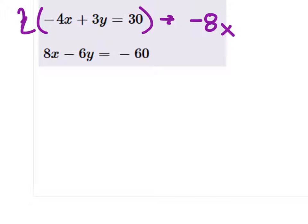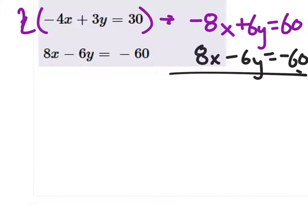negative 8x plus 6y equals 60, and the bottom equation stays the same. Since those coefficients are opposites, when I start adding them, these eliminate.